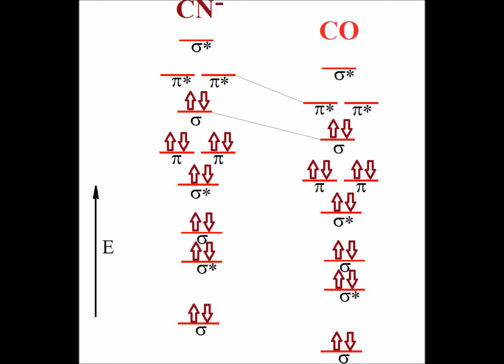That makes cyanide a better base, whereas carbon monoxide has lower energy pi antibonding orbitals, which makes it a better pi acid than cyanide. I thank you very much for your attention. Have a good one.